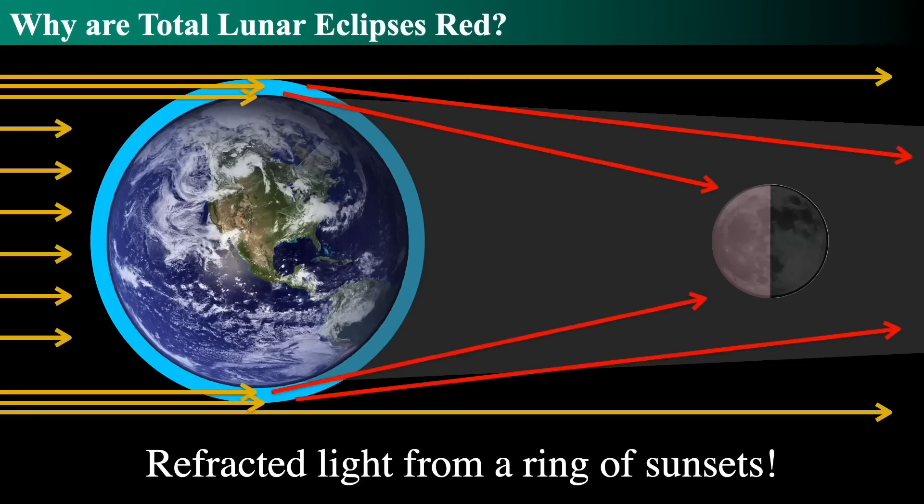If you were on the moon, looking up at the earth during a total lunar eclipse, unlike a solar eclipse, because the moon has no atmosphere, during a solar eclipse, you see the atmosphere of the sun. And you can see, which we'll talk about in another video, about total solar eclipses.